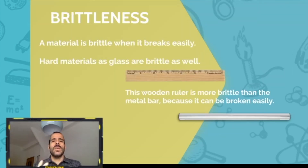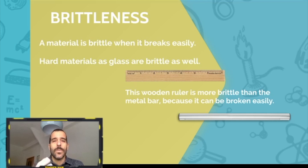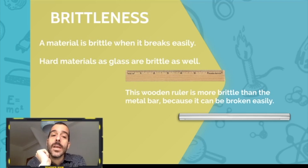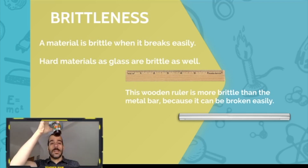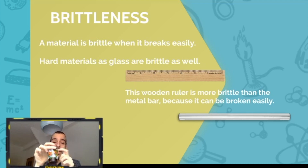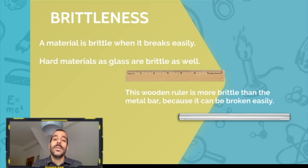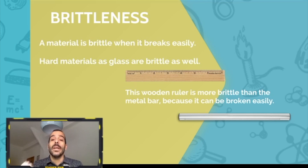Finally, we're going to see brittleness. Brittleness has to do with how fragile something is. A material is brittle when it breaks easily. Hard materials can be brittle too — glass is hard and rigid, but if you drop it on the floor it will break, so it is brittle as well. In this example, a wooden ruler and a metal bar: the wooden ruler is more likely to break easily, so it's more brittle than the metal bar.